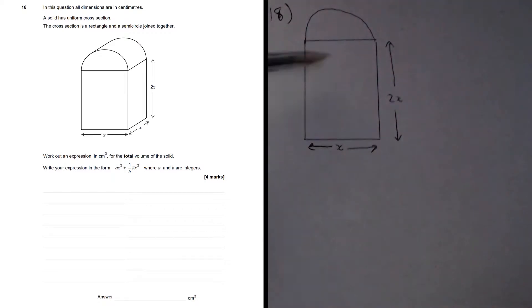So let's deal with the area of the cross section first. We've got a rectangle here, and then we've got a semicircle at the top.